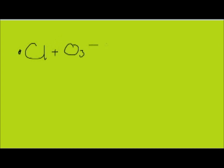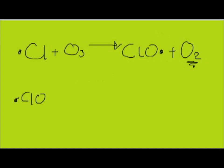Propagation step one: the chlorine radical reacts with an ozone molecule to produce a chlorate radical and O2. This O2 is going to appear in our overall equation. The next propagation stage is the chlorate radical reacts with an atom of oxygen to produce O2 and a chlorine radical.